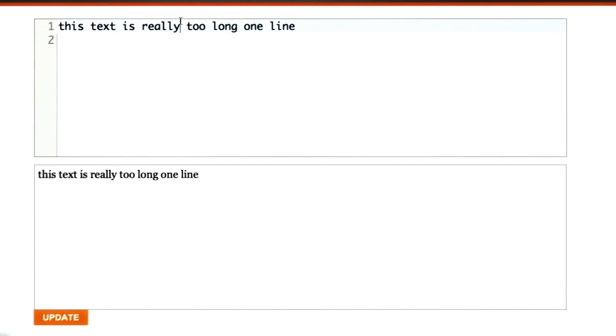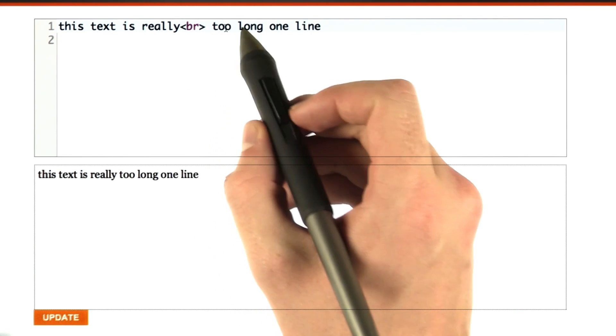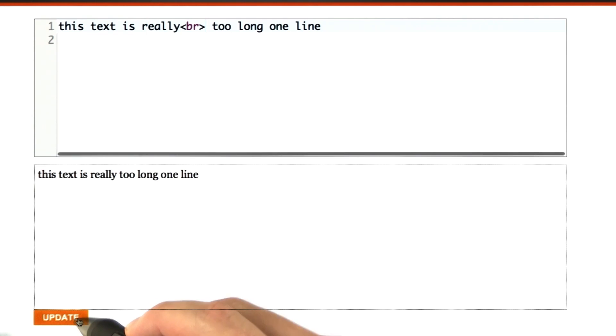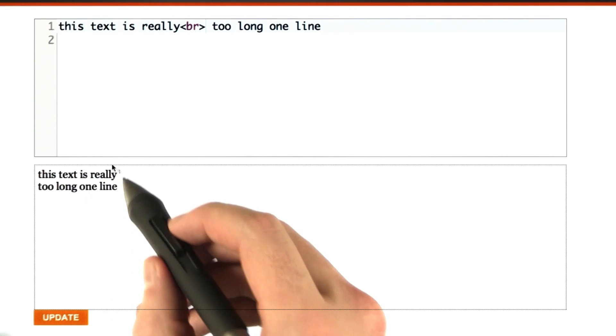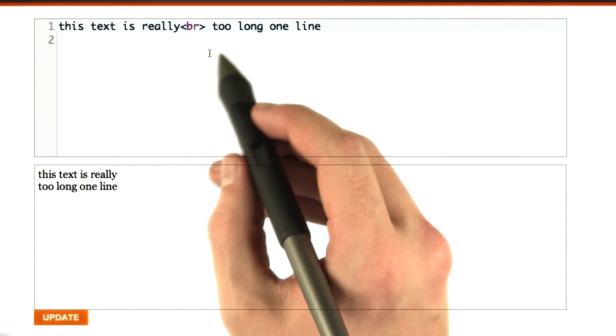If we can put a br tag in the middle of this, we don't actually have to have the line breaks in our HTML. So when I click update, we get our line break no matter how the HTML is formatted.